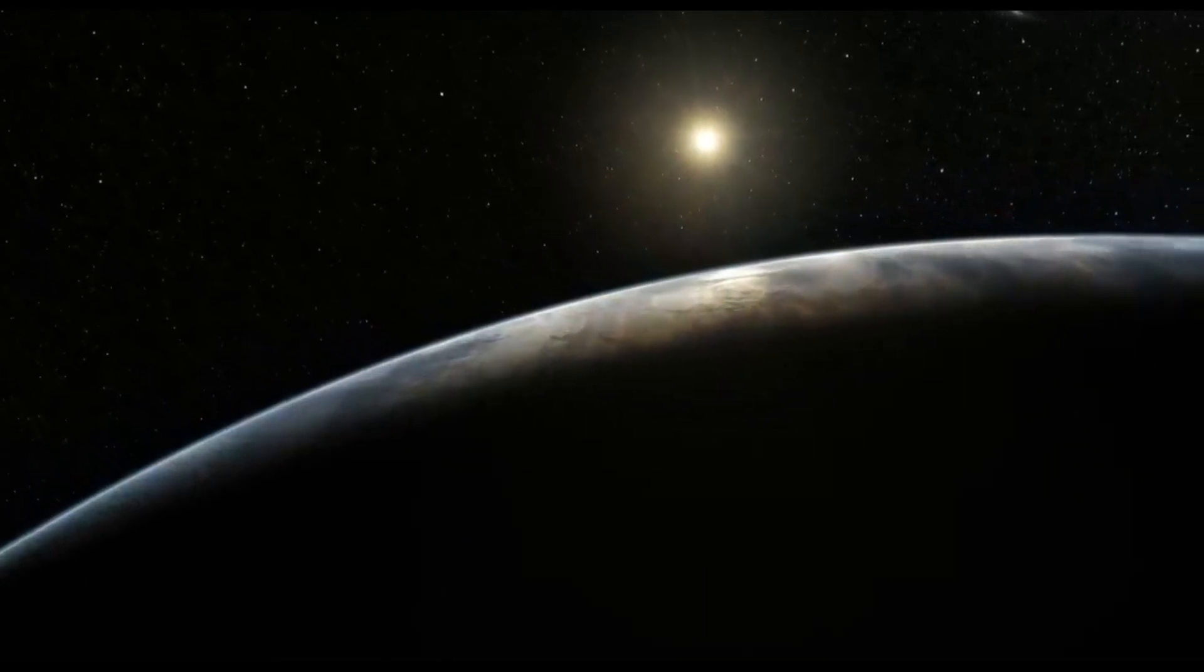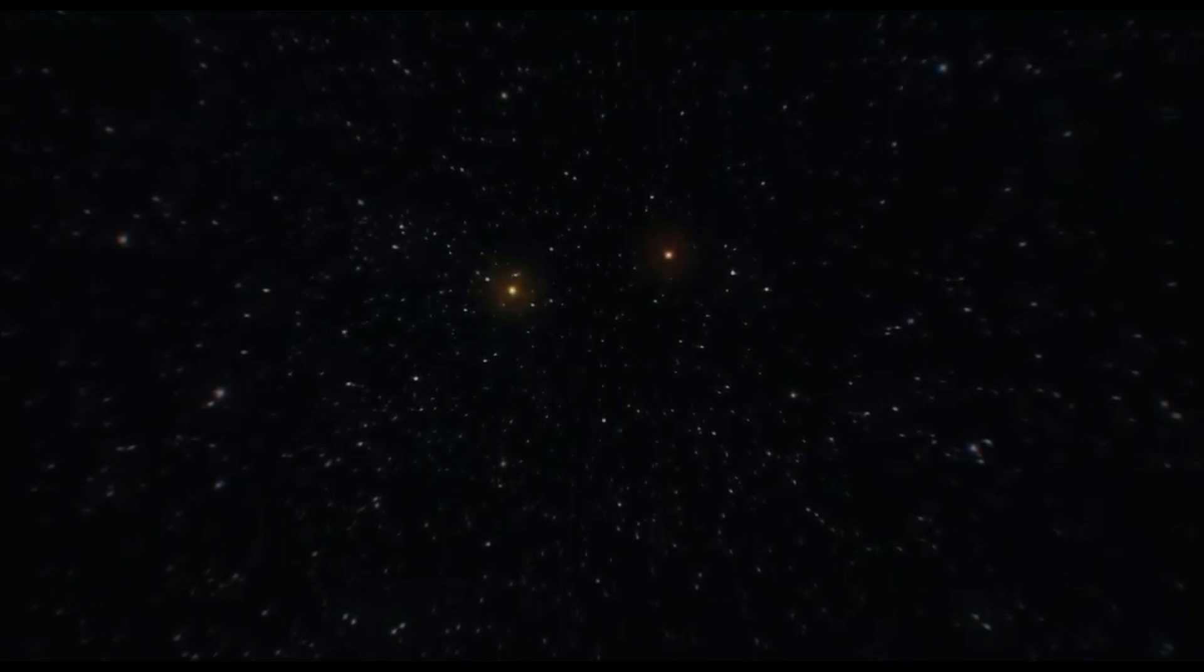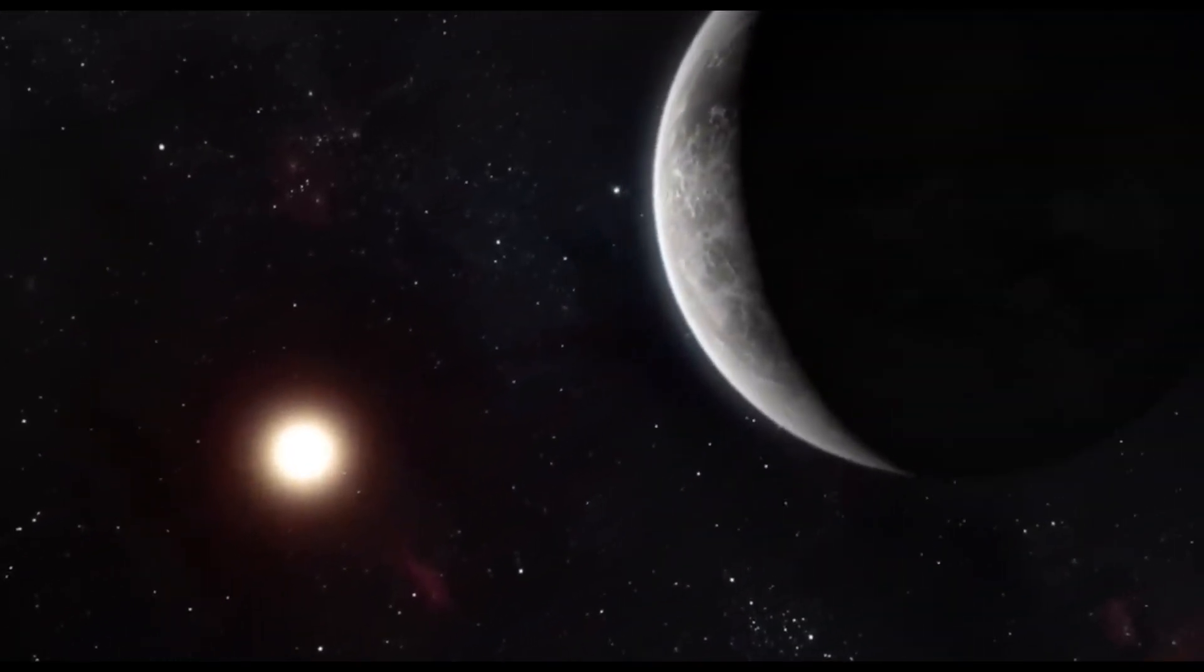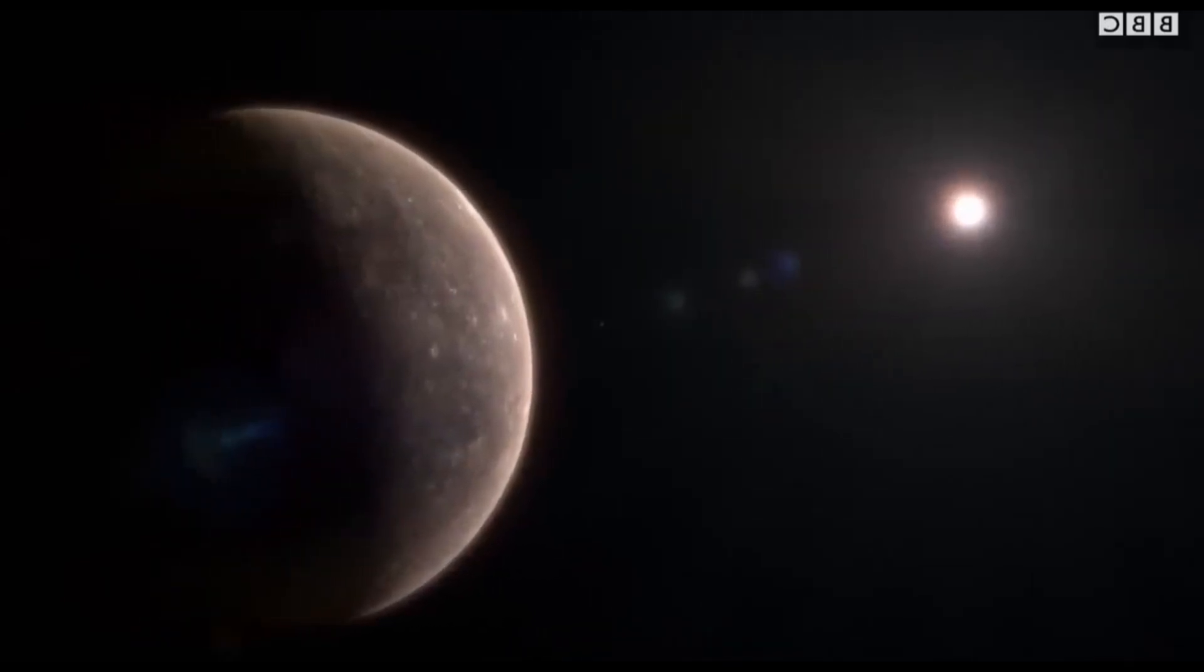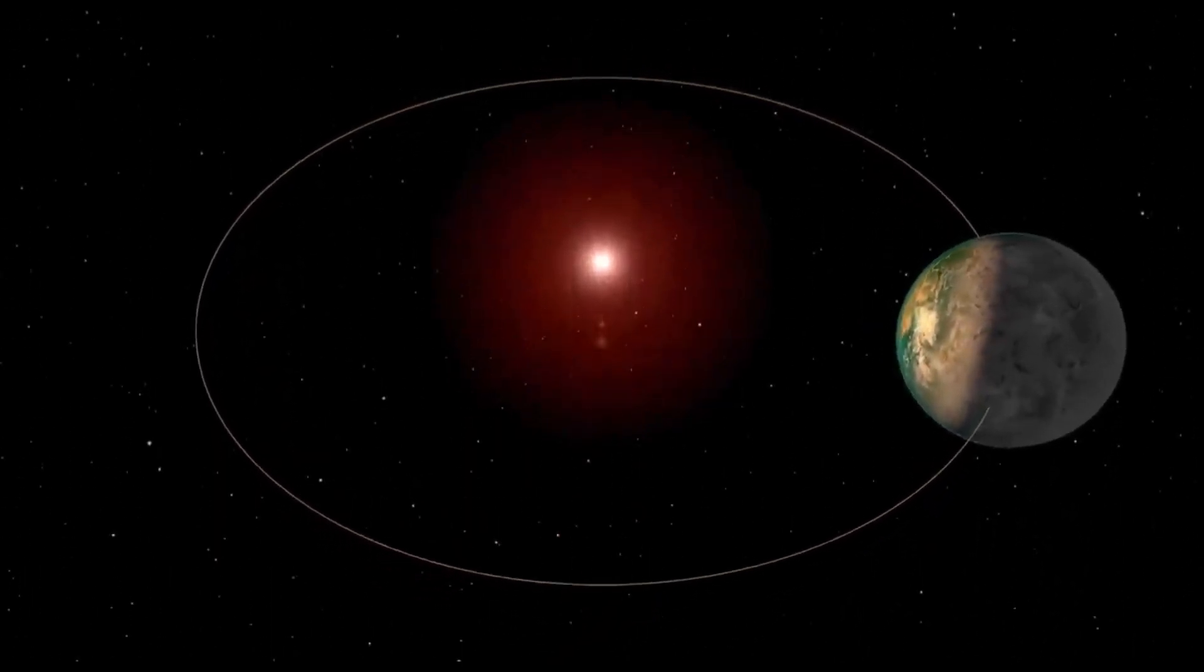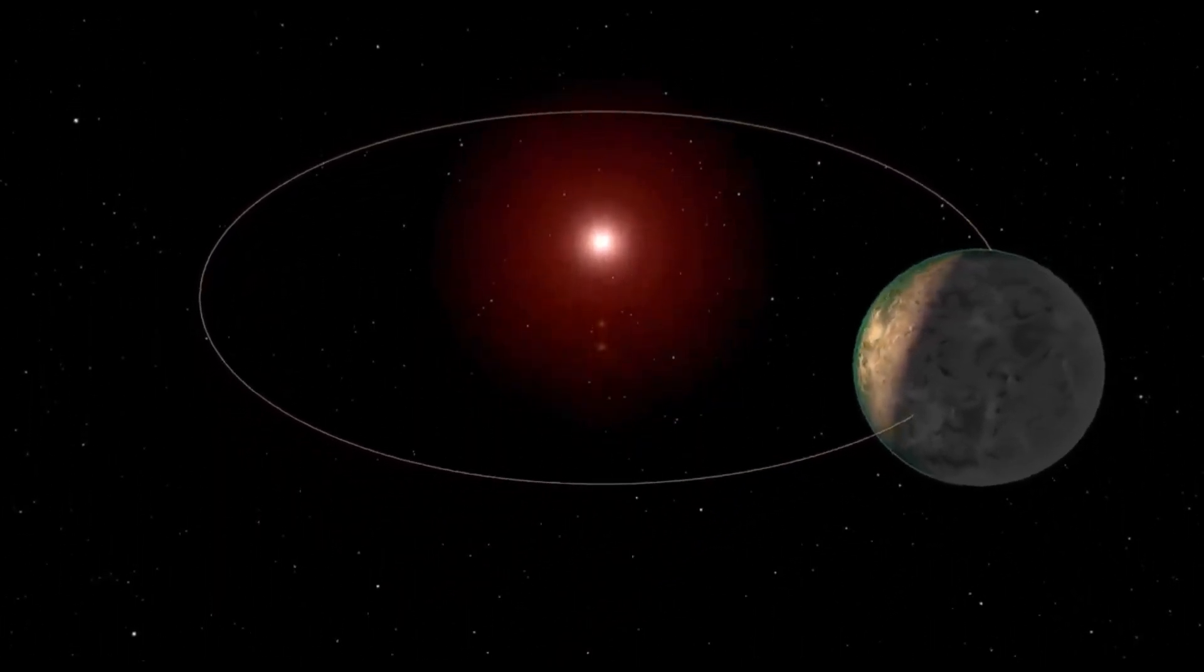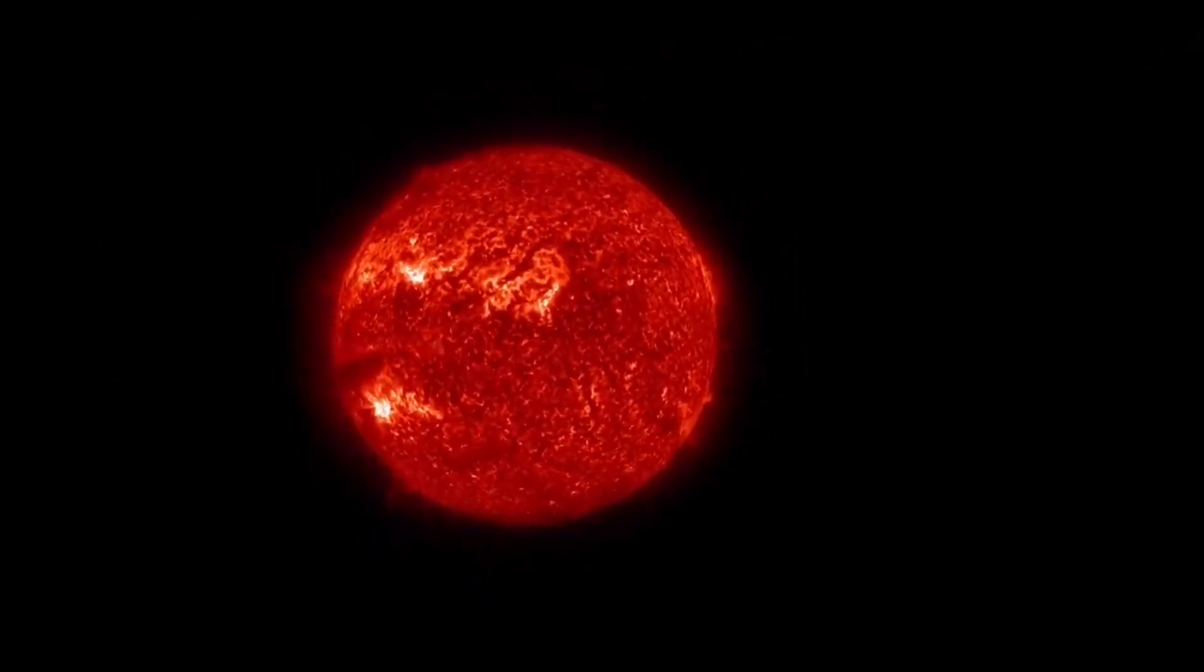Nevertheless, Proxima b isn't exactly a paradise for sustaining life. It is most likely tidally locked, meaning it constantly shows the same side to the star. This causes extreme temperature changes between the day and night sides. Because of its proximity to Proxima Centauri, the planet is bathed in ultraviolet light and X-rays at a rate 100 times that of Earth. Even without a protective magnetic field like Earth's, Proxima b gets bombarded with high-energy particles during star flare-ups. There is, however, a decent range of conditions that may make it a pleasant planet.